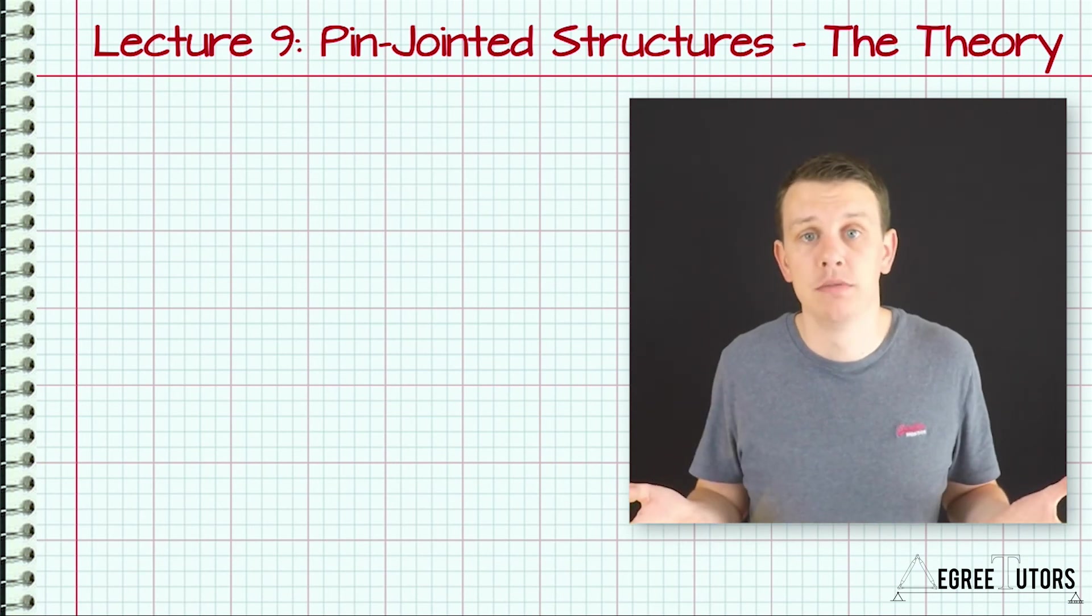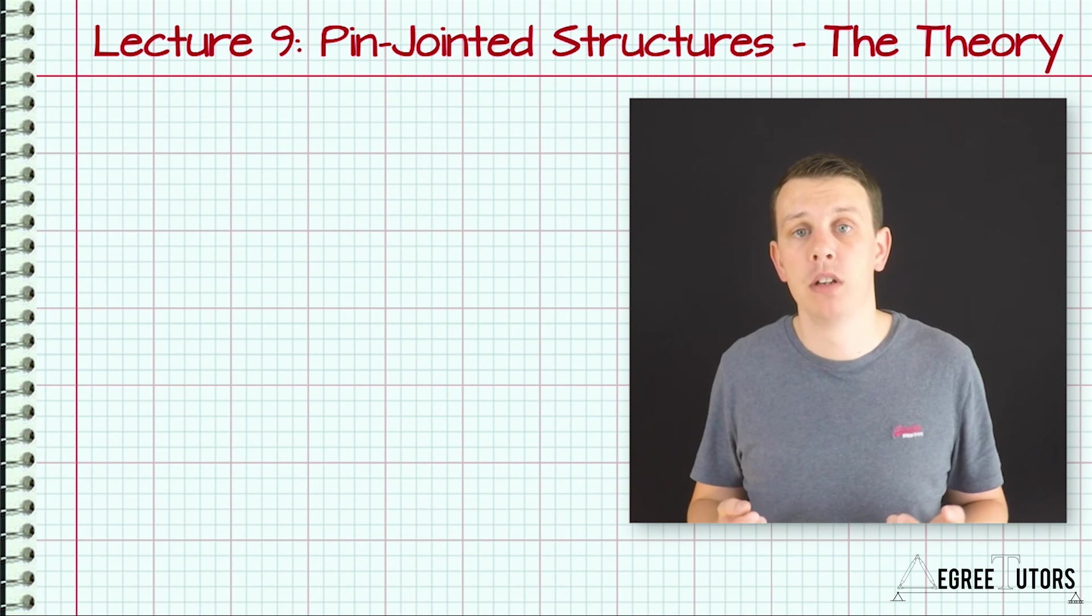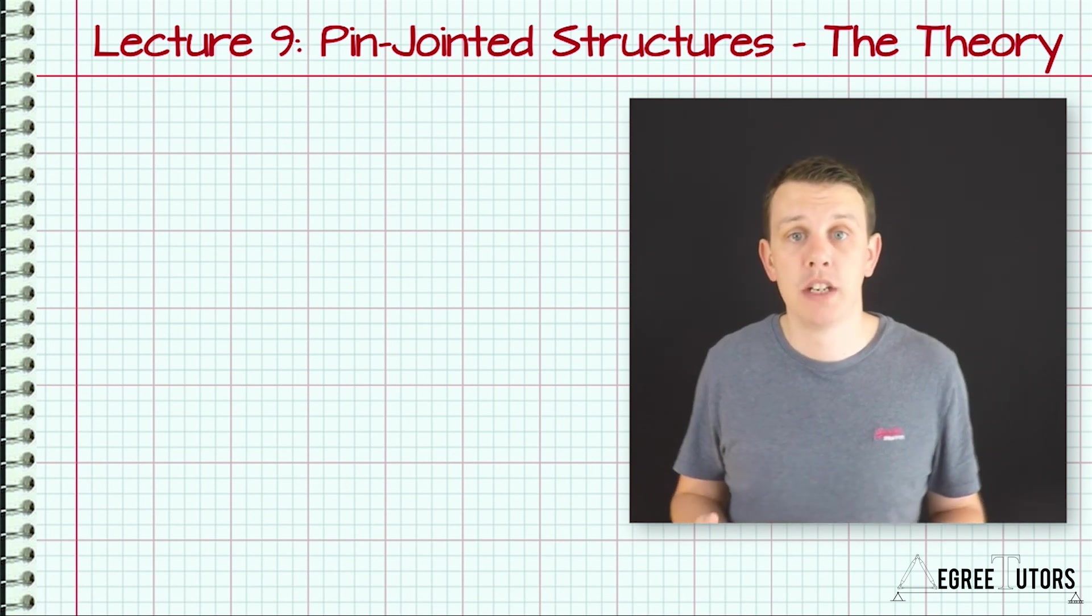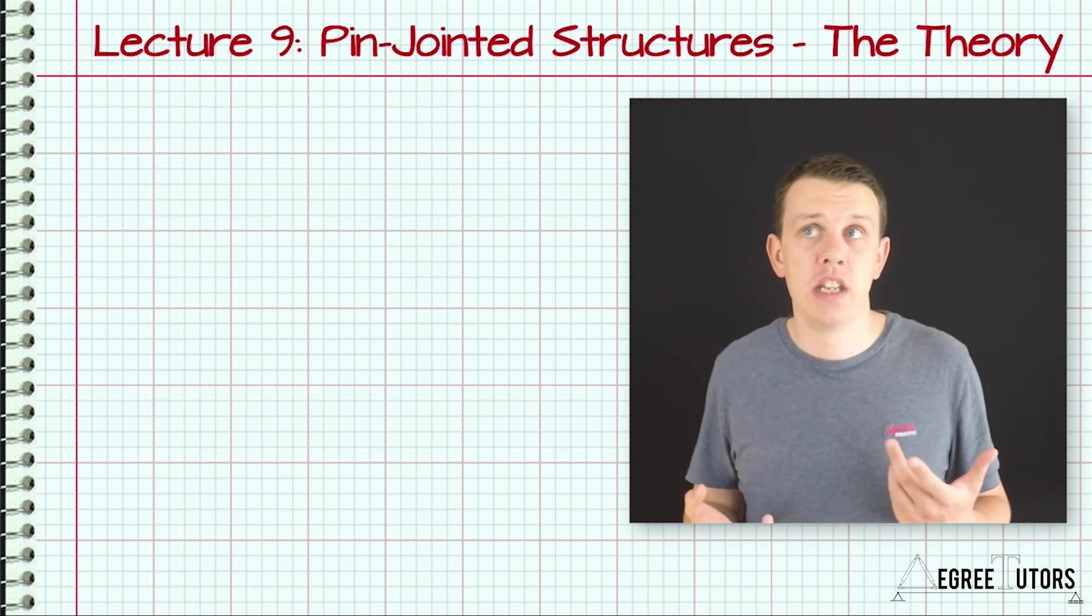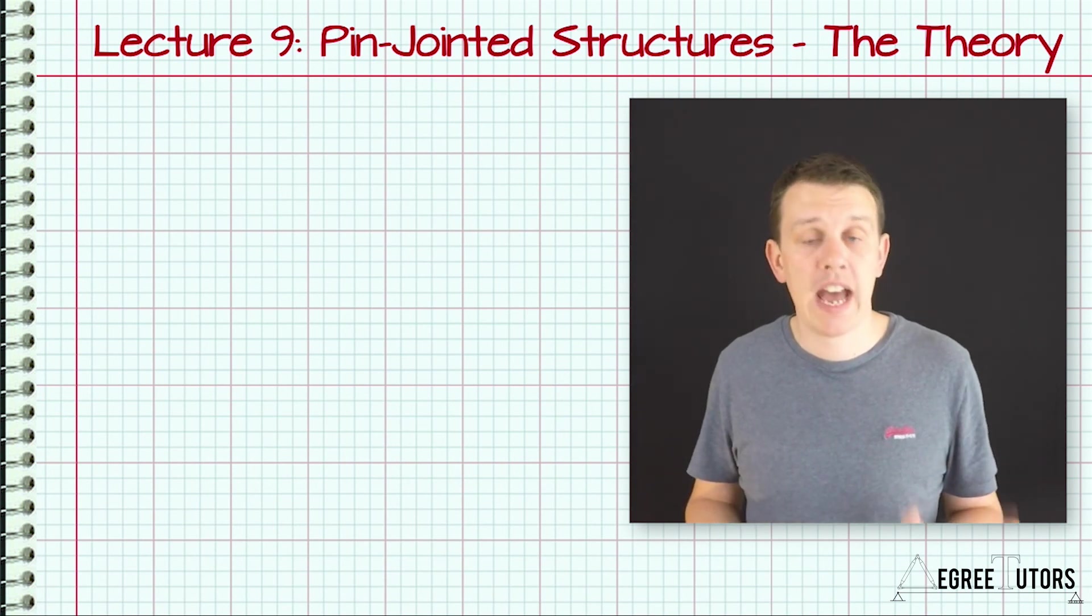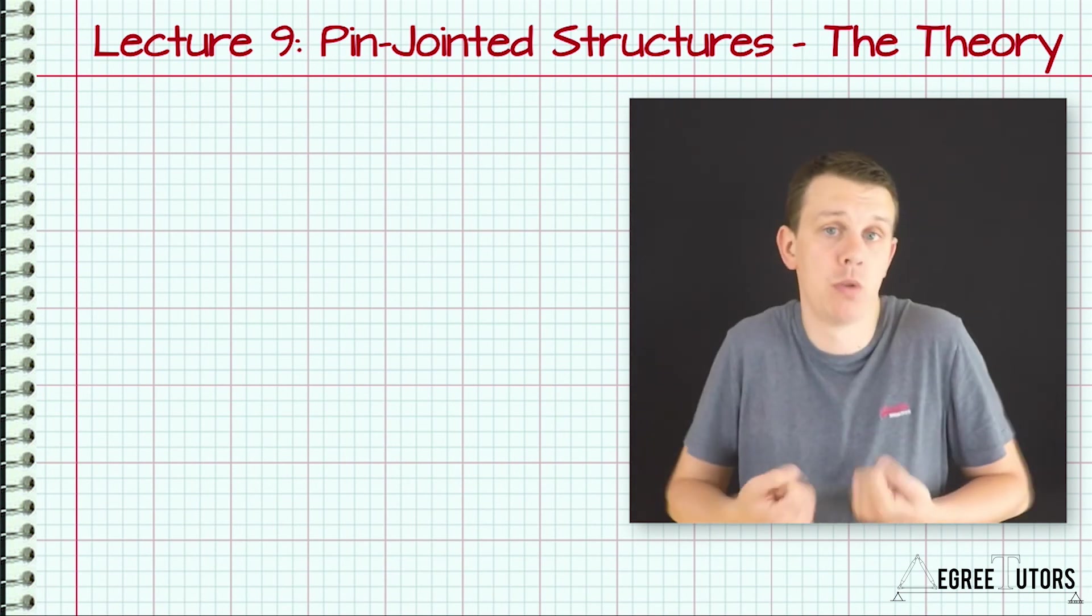We have an idealized model and the real-world behavior of our truss will be different from that model. In particular, when we talk about the joints within a truss, we said that the joints behave as pin joints. They don't transmit any bending moment and they're free to rotate.